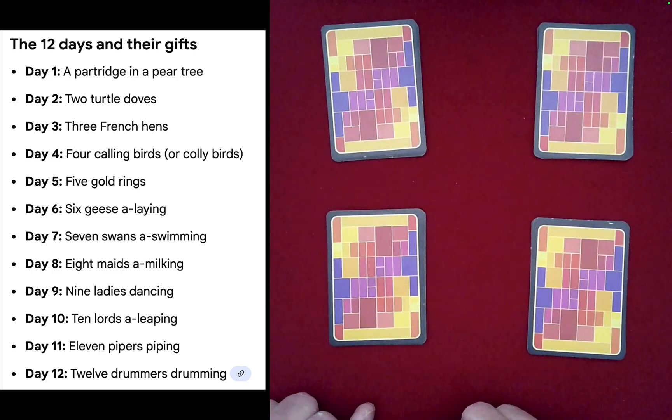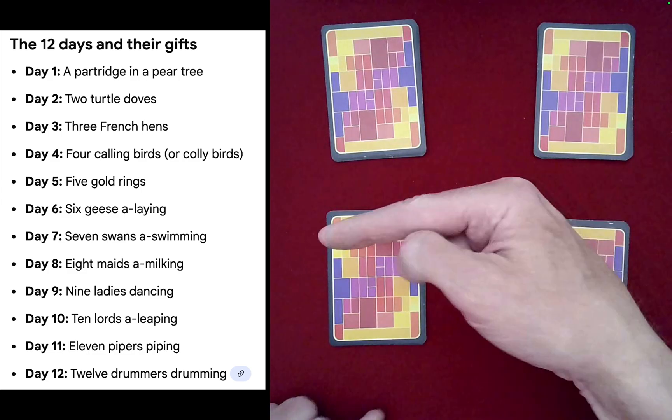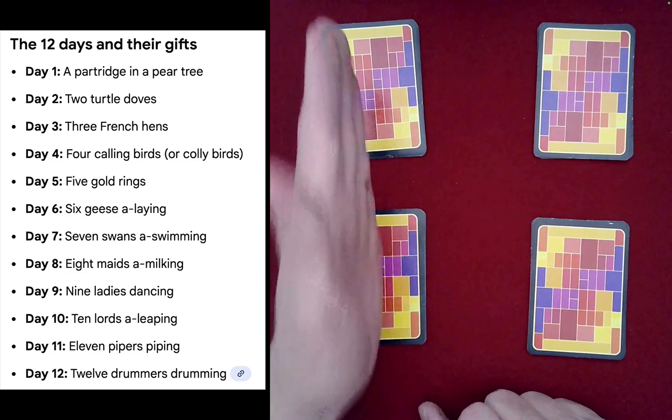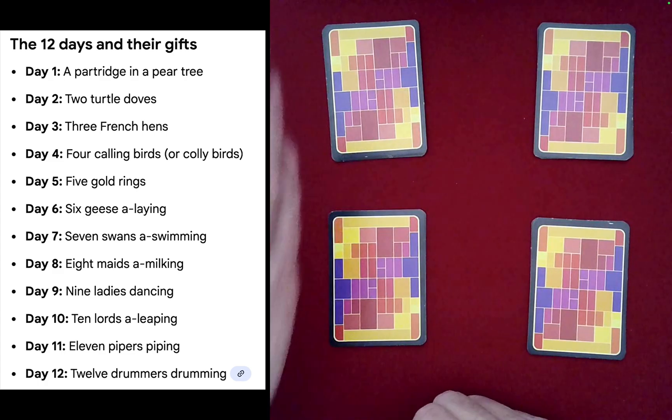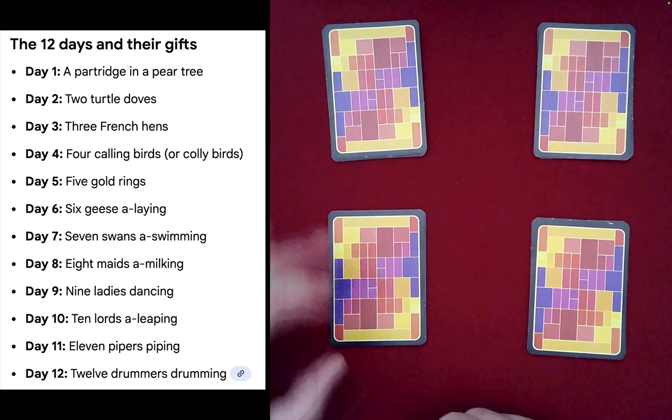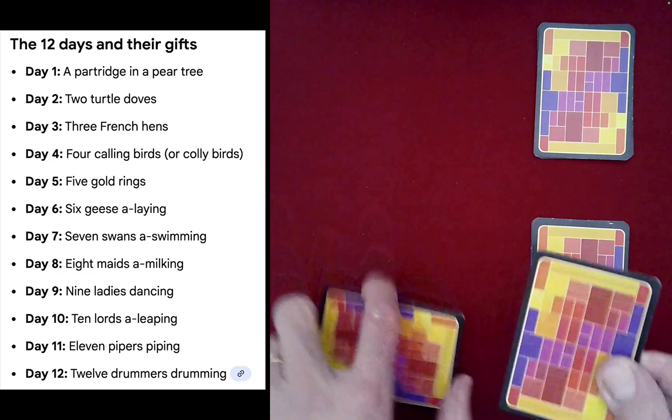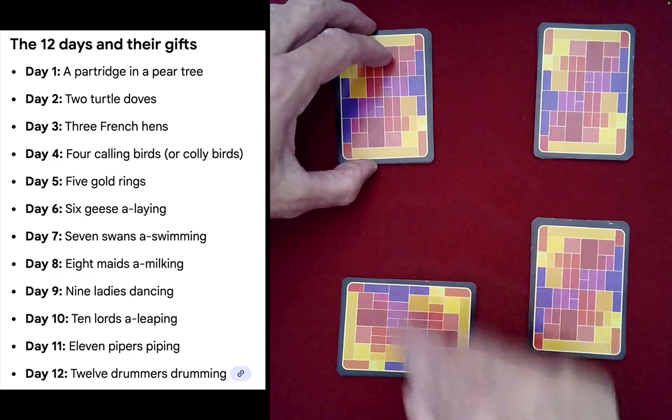For each of them, they just need to decide which of their two piles they want to keep and which one goes to the other spectator. Spectator A, which of these two piles do you want to keep as one of yours? The bottom one? Okay, so this one here will go to spectator B in just a moment.